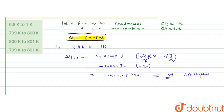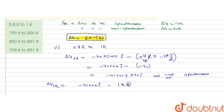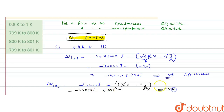Now checking at 1 kelvin: ΔG = -40,000 joules minus (1 K × -50 J/K) = -40,000 + 50 joules. ΔG is still negative because 40,000 is much greater than 50. So the reaction is also spontaneous at 1 kelvin. This means for the temperature range 0.8 to 1 kelvin the reaction is spontaneous throughout, so this option is incorrect.